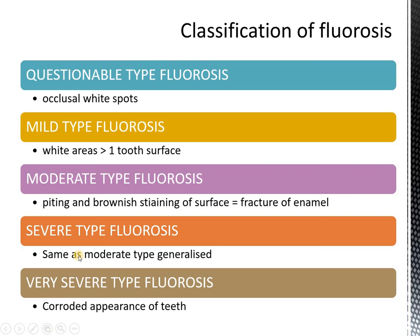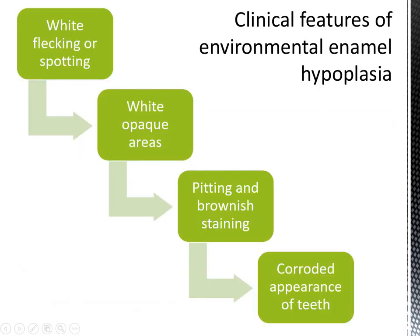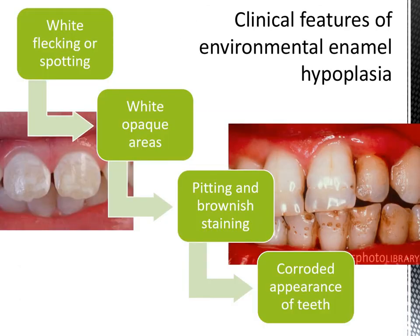Fluorosis may be classified from a questionable type, where you just see white spots, to mild, moderate, severe, or very severe type of fluorosis, where you see a corroded appearance of the teeth. Clinically, most of these environmental hypoplasias may look like a simple white spot on the tooth, may extend to white areas, giving rise to severe conditions where you have pitting and corroded appearances.